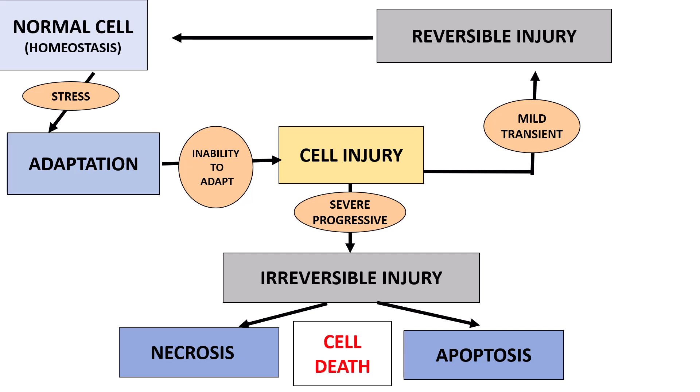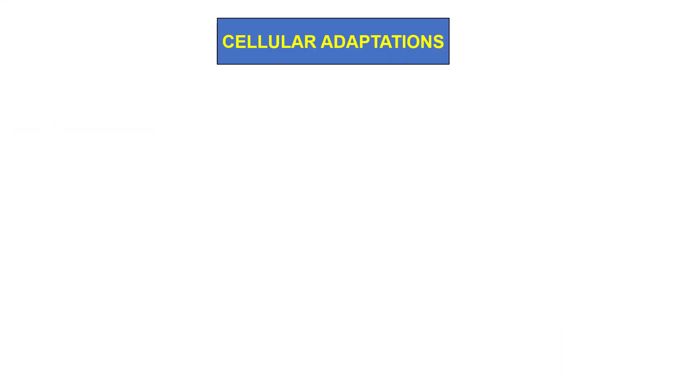If you are a student of pathology and this is the first chapter, the entire chapter will be around these concepts. Firstly, you will learn about adaptation, then cell injury — reversible, irreversible — and necrosis and apoptosis. So in today's session, you will be learning about adaptation.